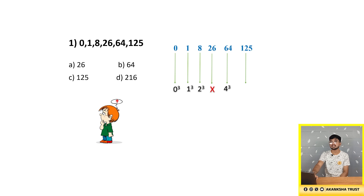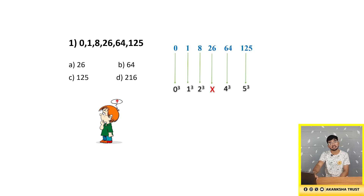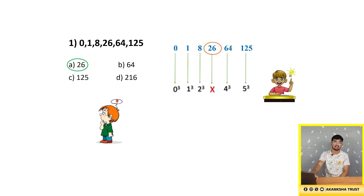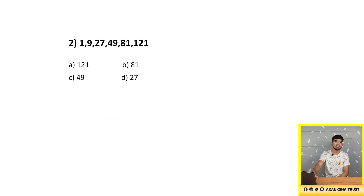The next number 64 is 4 cubed, and the last number 125 is 5 cubed. So 26 doesn't follow the sequence — the wrong number is 26, which is option A.